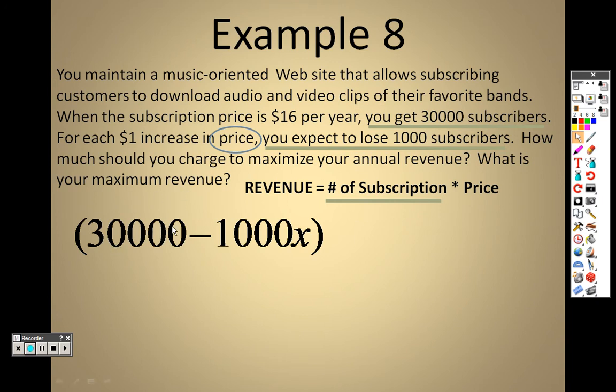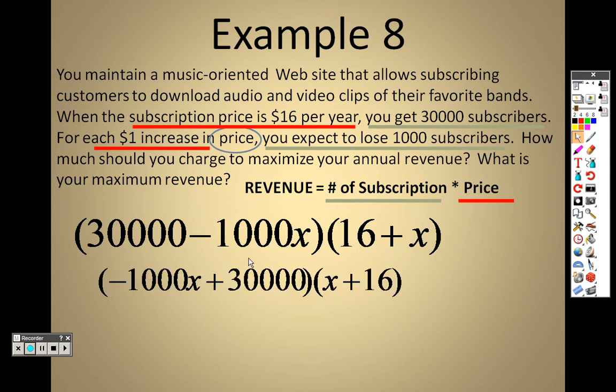Well, revenue equals the number of subscriptions times the price. The number of subscriptions is $30,000. And the price, you expect to lose 1,000 subscriptions each year. So $30,000 minus what you're expected to lose, which is 1,000x subscriptions. And the price now is $16 per year and it increases by x. So 16 plus x. So to find the maximum price, this is what we have.